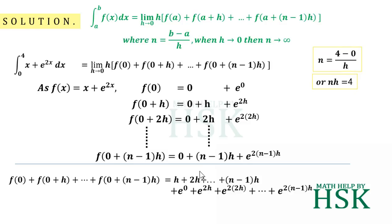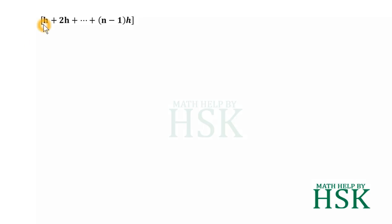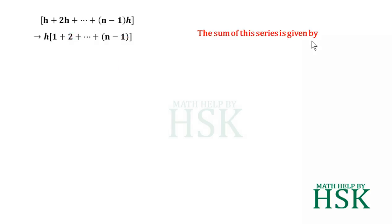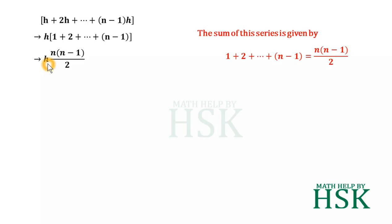Now we calculate the sum of these terms. For the arithmetic part h + 2h + ... + (n-1)h, we take h as common to get h × [1 + 2 + ... + (n-1)]. The sum 1 + 2 + ... + (n-1) equals n(n-1)/2, so this part becomes h × n(n-1)/2.